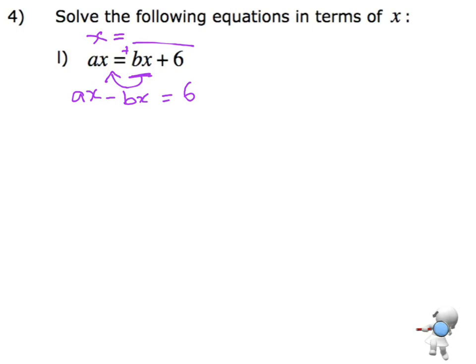Now I can look at that and say, I'm trying to solve to get x, and I've got x in both of these pieces. I've got an ax minus a bx. I've got two bits with x's in them.